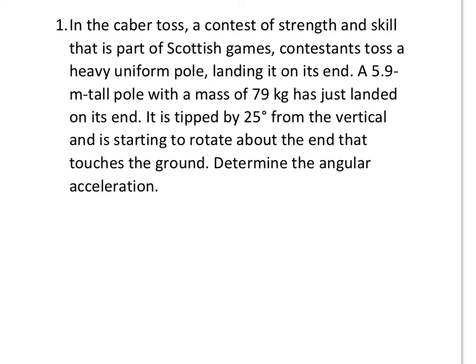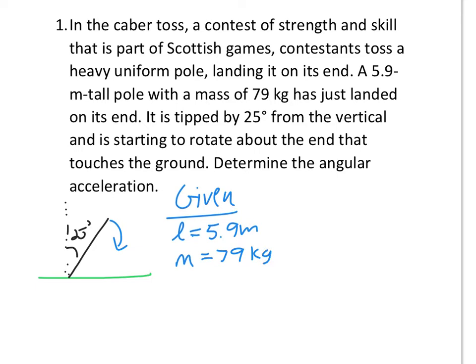So let's draw what's happening here. Here's the ground. We have the pole that has landed in the ground, and it's making a 25 degree angle with the vertical. Let's list what we know, and it's just beginning to rotate, so it's just beginning to fall down. So if we list what we know, it tells us that the length of the pole, so I'm going to call that L, is 5.9 meters. Mass of the pole is 79 kilograms, and angle theta is 25 degrees.